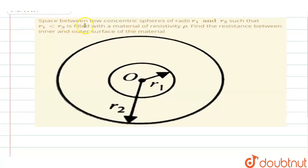The question is here: the space between two concentric spheres of radii R1 and R2 are such that R1 is less than R2. So that R1 is less than R2 is easily shown here.